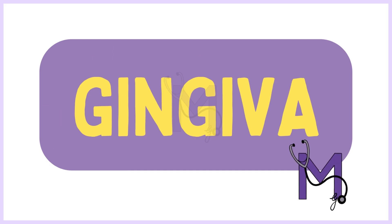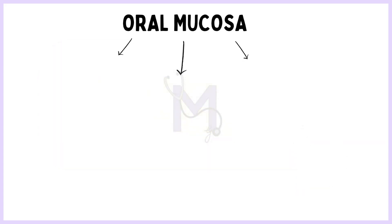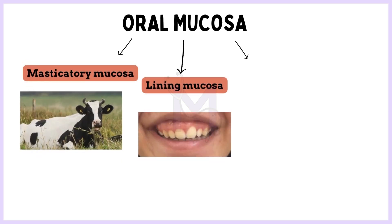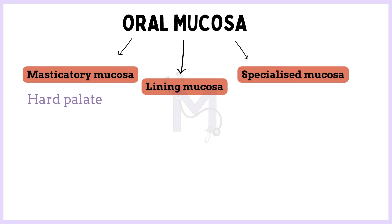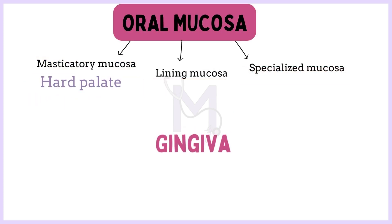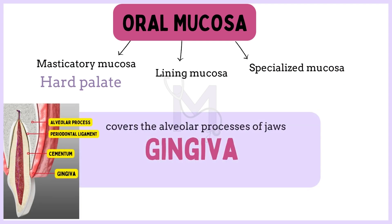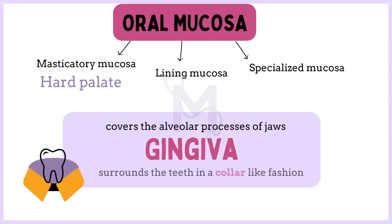The oral mucosa was classified as masticatory mucosa, lining mucosa and specialized mucosa. Hard palate and gingiva are examples of masticatory mucosa. By definition, gingiva is the part of the oral mucosa that covers the alveolar processes of the jaw and surrounds the necks of the teeth in a collar-like fashion.